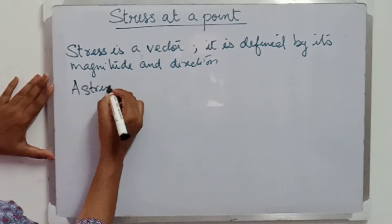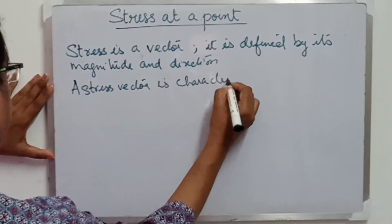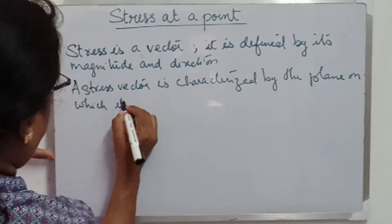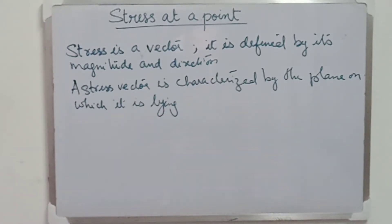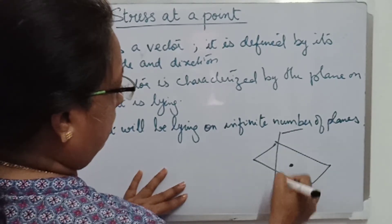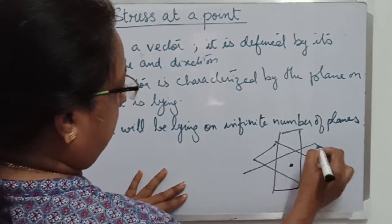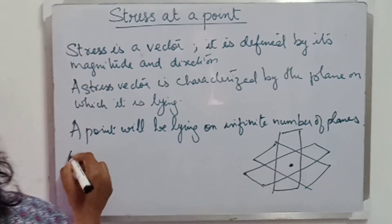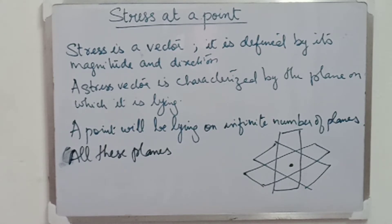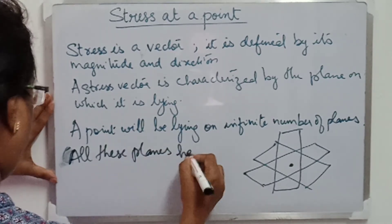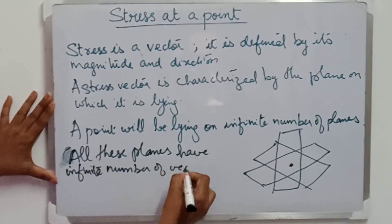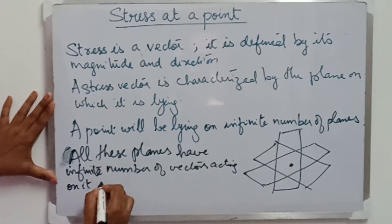Also, we know that a stress vector is characterized by the plane on which it is lying. A point will be lying on infinite number of planes. Let us consider one point here. It will be lying in a horizontal plane, a vertical plane or an inclined plane like this. So, all these planes will have infinite number of vectors passing through it or acting on it.